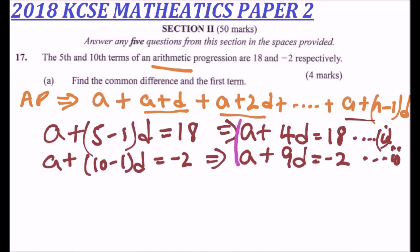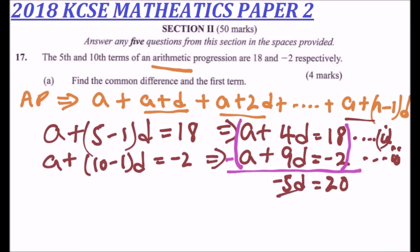We can solve this simultaneous equation by elimination. To eliminate a, we subtract equation two from equation one. a minus a is zero, and 4d minus 9d gives minus 5d, which equals 18 minus minus 2, giving positive 20. Dividing both sides by minus 5, we get d equals minus 4.